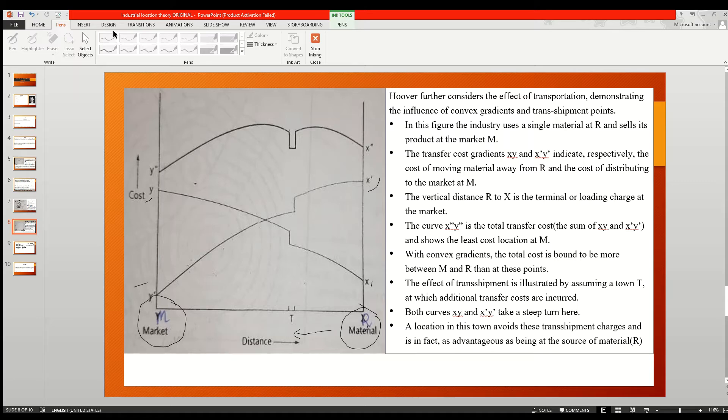And X dot Y dot indicates the cost of distributing, or simply we can say the promotion cost of our goods. The farther we go from the market to isolated areas, we have to promote our goods more, so the cost will increase rapidly.